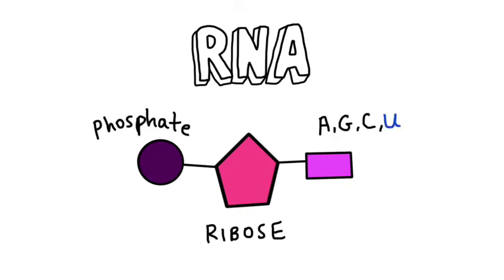The bases of RNA are adenine, guanine, cytosine and uracil. Uracil replaces thymine in RNA.